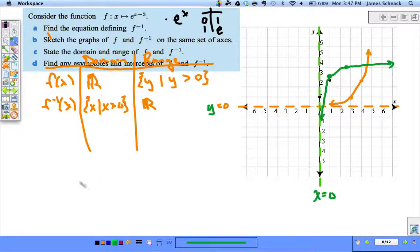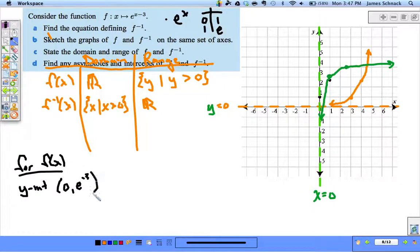We plug in zero, we get e to the negative third. I'm just plugging in zero right there. No x-intercept.